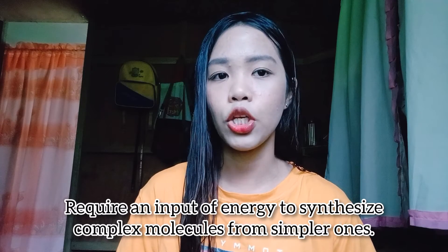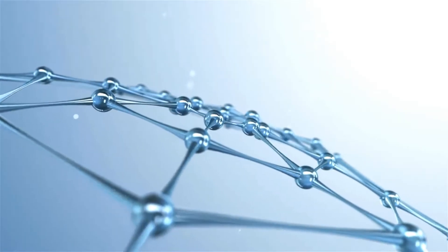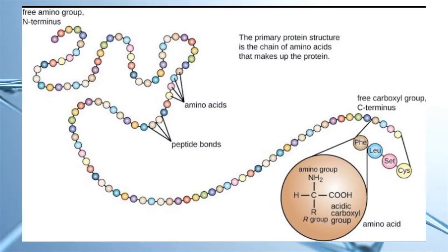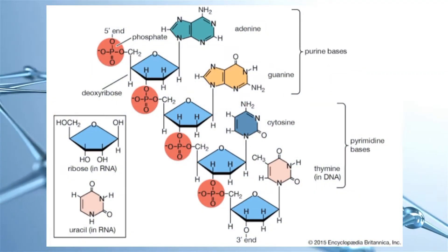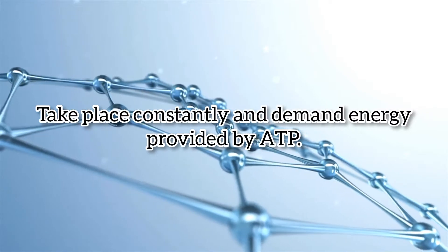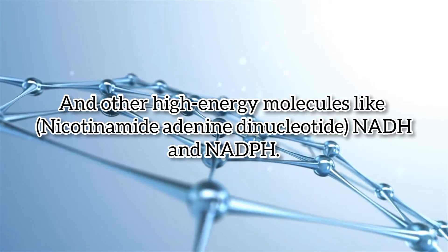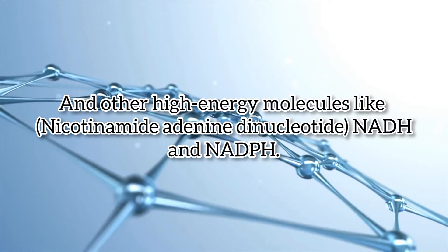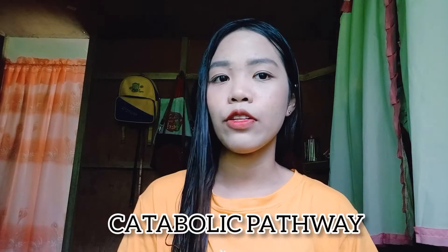Anabolic pathways require an input of energy to synthesize complex molecules from simpler ones. One example of an anabolic pathway is the synthesis of sugar from carbon dioxide. Other examples include the synthesis of large proteins from amino acid building blocks, and the synthesis of new DNA strands from nucleic acid building blocks. These processes are critical to the life of the cell, take place constantly, and demand energy provided by ATP and other high-energy molecules like NADH (nicotinamide adenine dinucleotide) and NADPH.